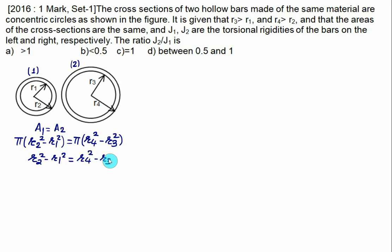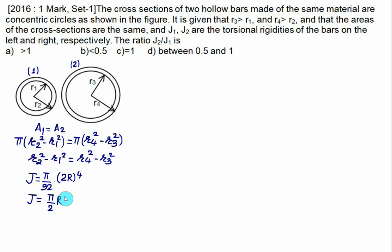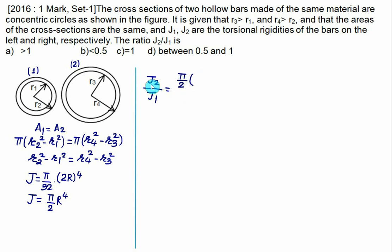The polar moment of inertia J = (π/32) × d⁴. Since d = 2r, we get d⁴ = 16r⁴, so J = (π/2) × r⁴. Now calculating J2/J1: J2 = (π/2)(r4⁴ − r3⁴) and J1 = (π/2)(r2⁴ − r1⁴). The π/2 terms cancel. Using the difference of squares identity, r4⁴ − r3⁴ = (r4² + r3²)(r4² − r3²) and similarly for r2⁴ − r1⁴.